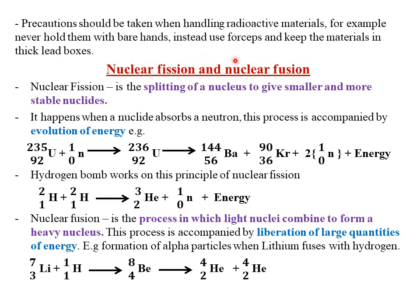Next, we look at nuclear fission and nuclear fusion. We start with nuclear fission, which simply refers to the splitting of nucleus to give smaller and more stable nuclei. It happens when a nucleus absorbs a neutron. This process is accompanied by evolution or production of energy.